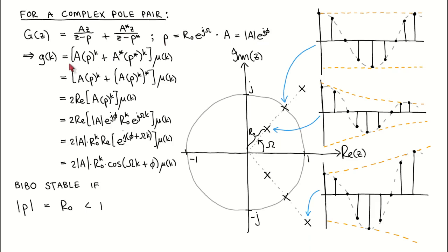The impulse response is then the sum of these complex exponential time functions. For the second term, we can equivalently write the complex conjugate of A times the complex conjugate of P to the power k as the complex conjugate of A times P to the power k. The sum of a complex number and its complex conjugate is equal to two times its real part.